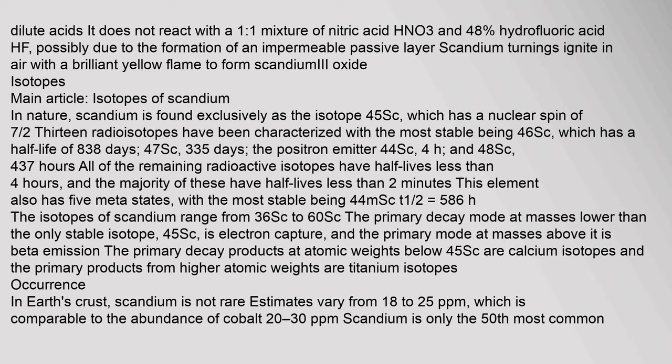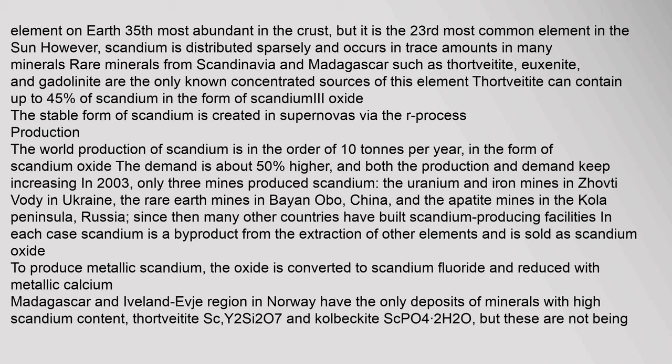Scandium is the 35th most abundant element on Earth in the crust, but it is the 23rd most common element in the sun. However, scandium is distributed sparsely and occurs in trace amounts in many minerals. Rare minerals from Scandinavia and Madagascar such as thortveitite, uexanite, and gadolinite are the only known concentrated sources of this element. Thortveitite can contain up to 45% of scandium in the form of scandium oxide.